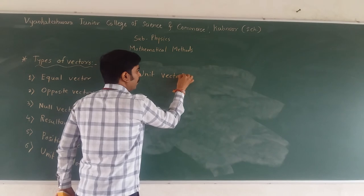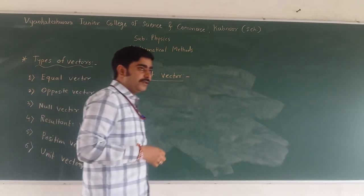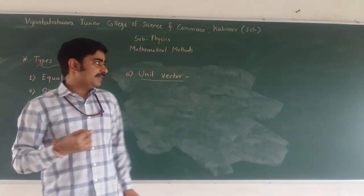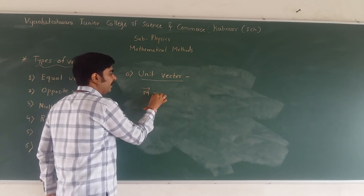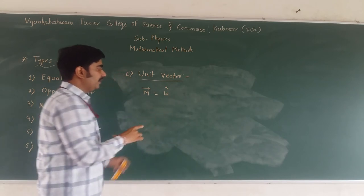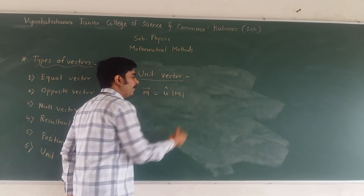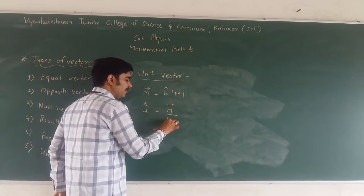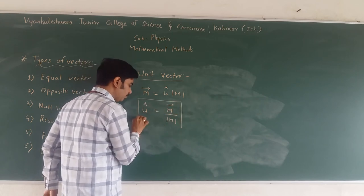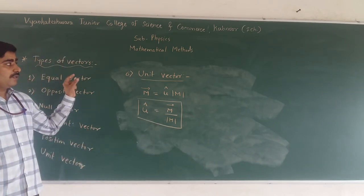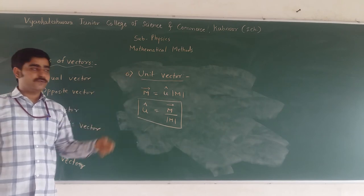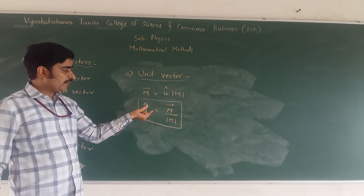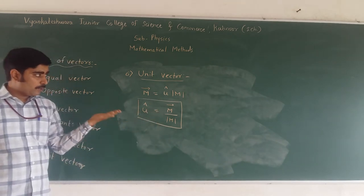Next is the unit vector. The vector having unit magnitude is known as a unit vector. For example, consider vector M. We can write it as its magnitude multiplied by u-cap, where u-cap indicates its direction. So u-cap, the unit vector, is equal to the given vector divided by its magnitude. This is the formula to find the unit vector.